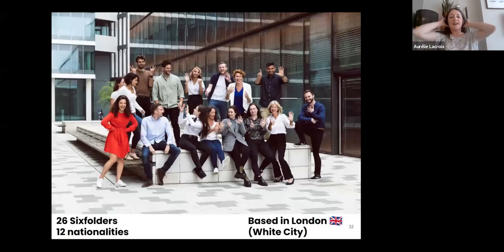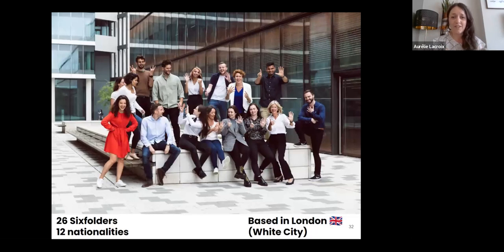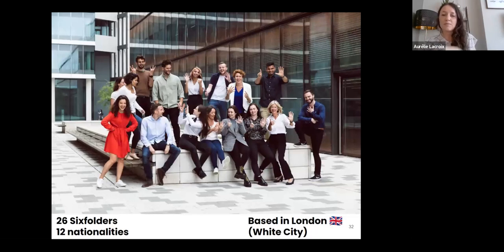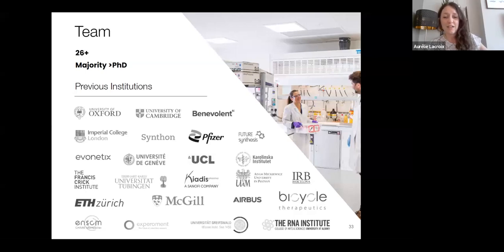At Six Bowl Bioscience, when I joined we were seven people and now we are around 26-27. We come from various backgrounds and countries and are based in London at the White City campus, next to Imperial College, allowing great collaboration. We are a team mostly of PhDs with a large R&D team from very different backgrounds. One of my favorite things at Six Bowl is working with brilliant, kind, and smart people.